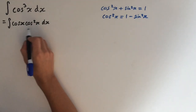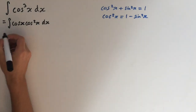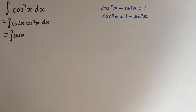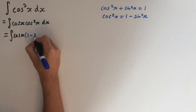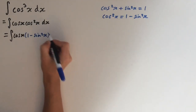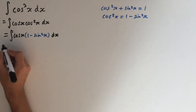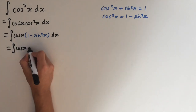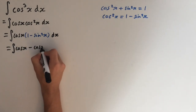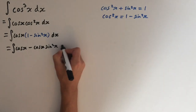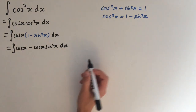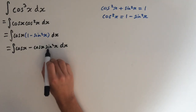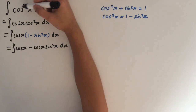So now we can substitute this into the integral, giving us the integral of cos of x times 1 minus sin squared of x dx. Let's expand this to get cos of x minus cos of x times sin squared of x dx. The reason we do this is because we can now integrate, since we've got the derivative of sin of x — which is cos of x — next to the function.